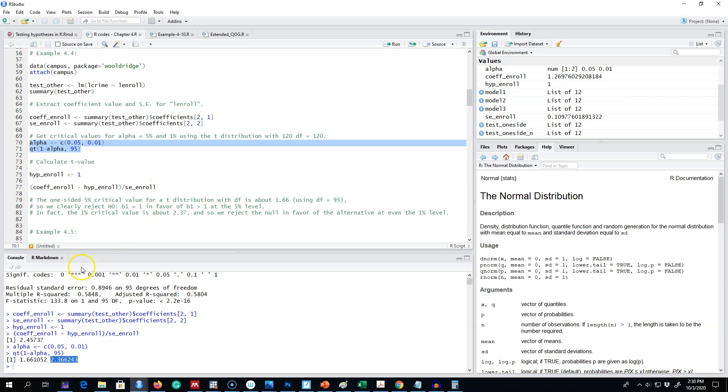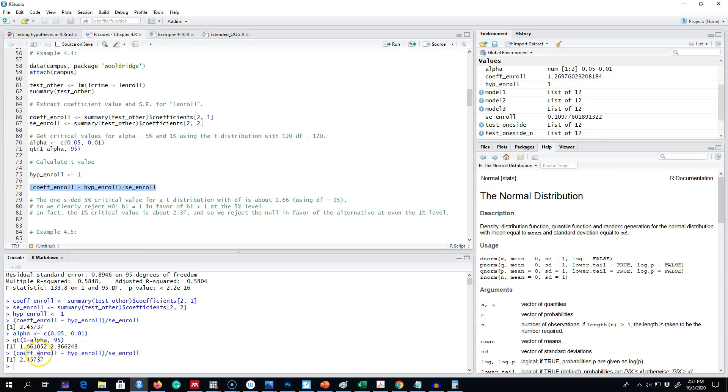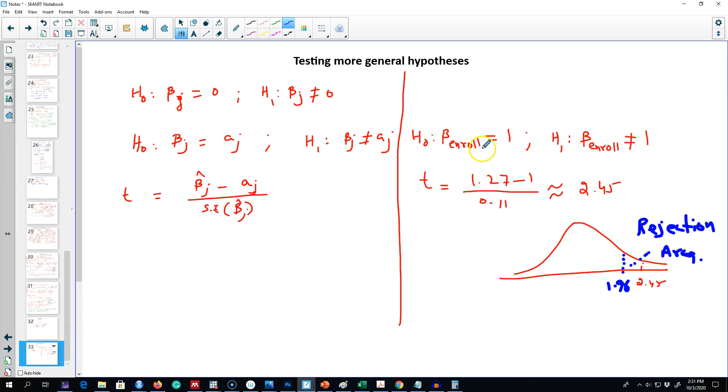Because our calculated value 2.47 is well above both of these numbers, we're gonna conclude that we reject the null hypothesis not only at 5% but also at 1%. We're gonna reject the null hypothesis in favor of the alternative hypothesis. We reject this null hypothesis and conclude that the elasticity of crime with respect to enrollment is not equal to 1. Alright, I will see you in the next video.